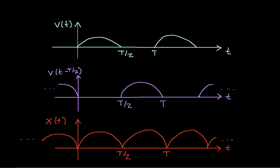Then we'll take the signal with just positive bumps, shift it to the right by T over 2, and add the original to the shifted version — leaving us with the whole sequence of positive bumps. The time shift uses the time shifting property to find the Fourier series coefficients, and when we add things together we use the linearity property of the Fourier series. We'll build the rectified sine wave piece by piece and work through what happens to the Fourier series coefficients.